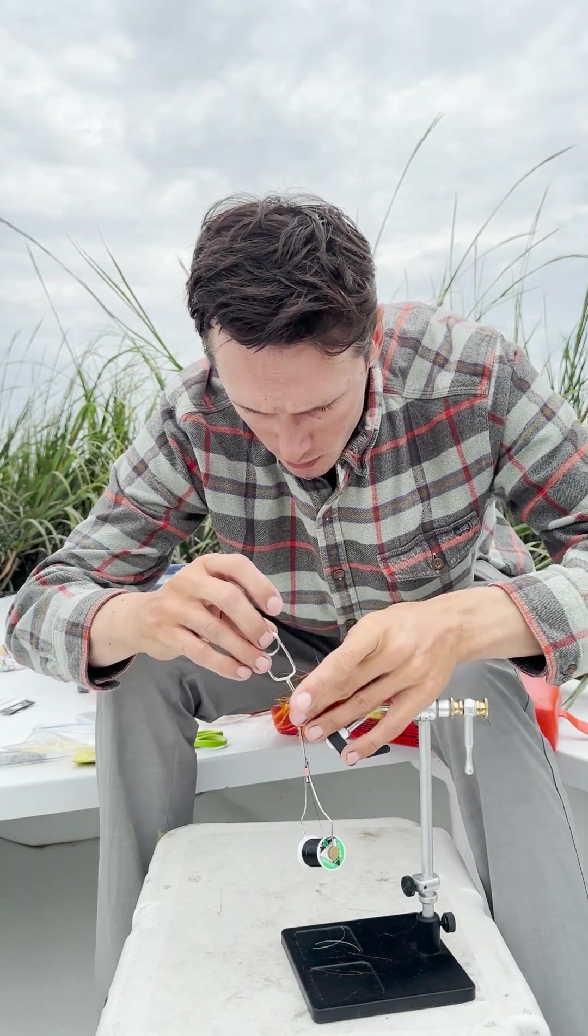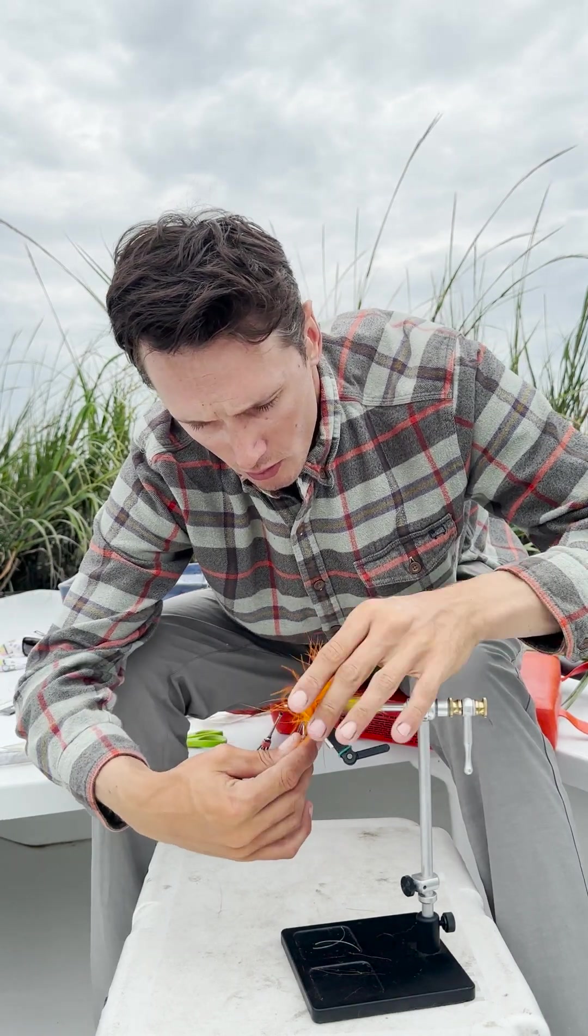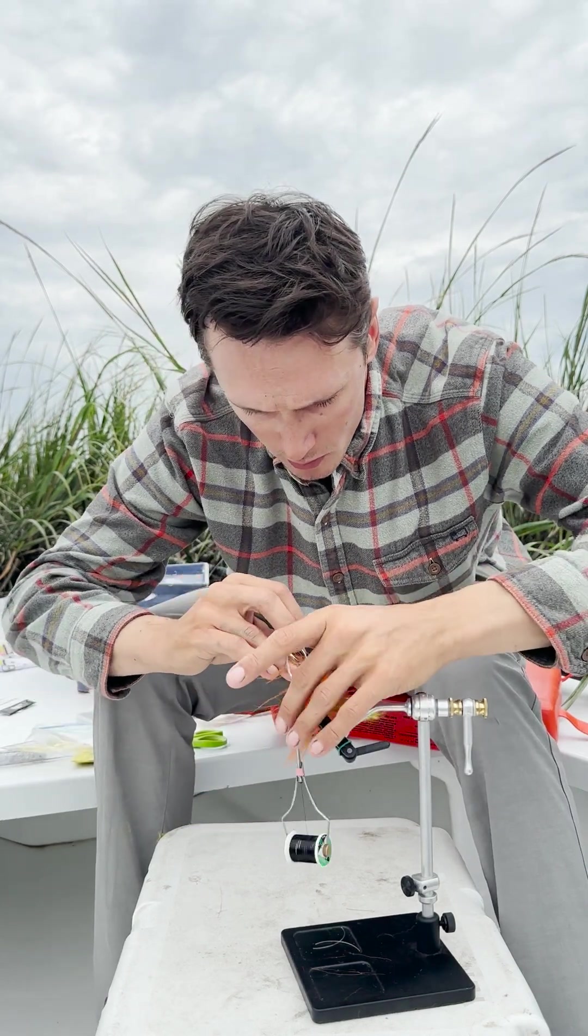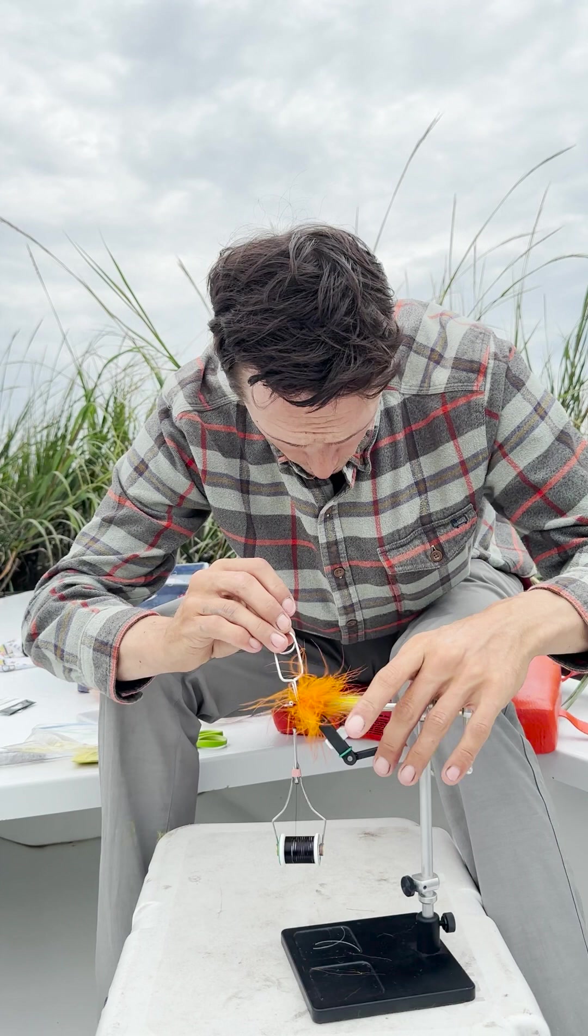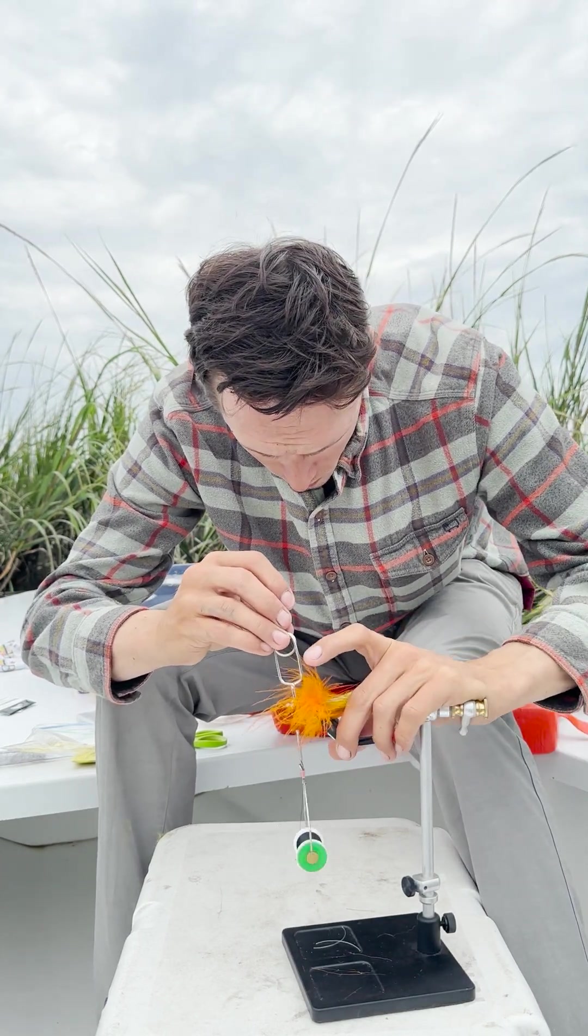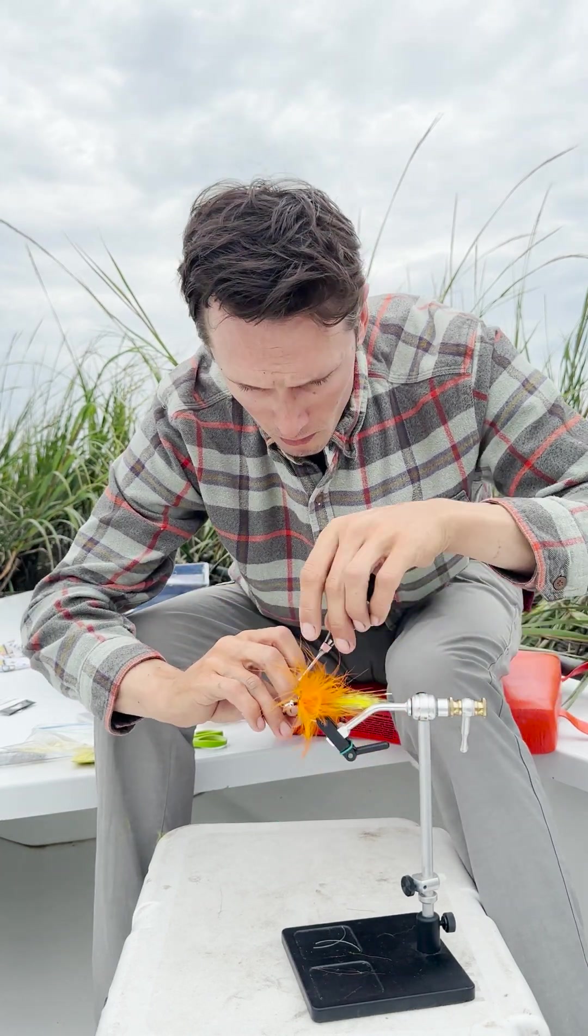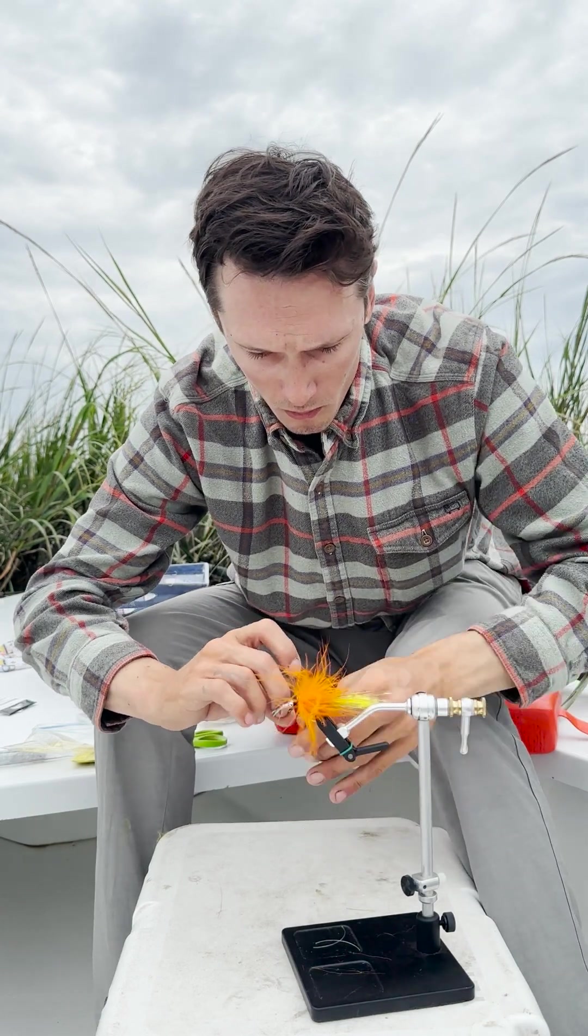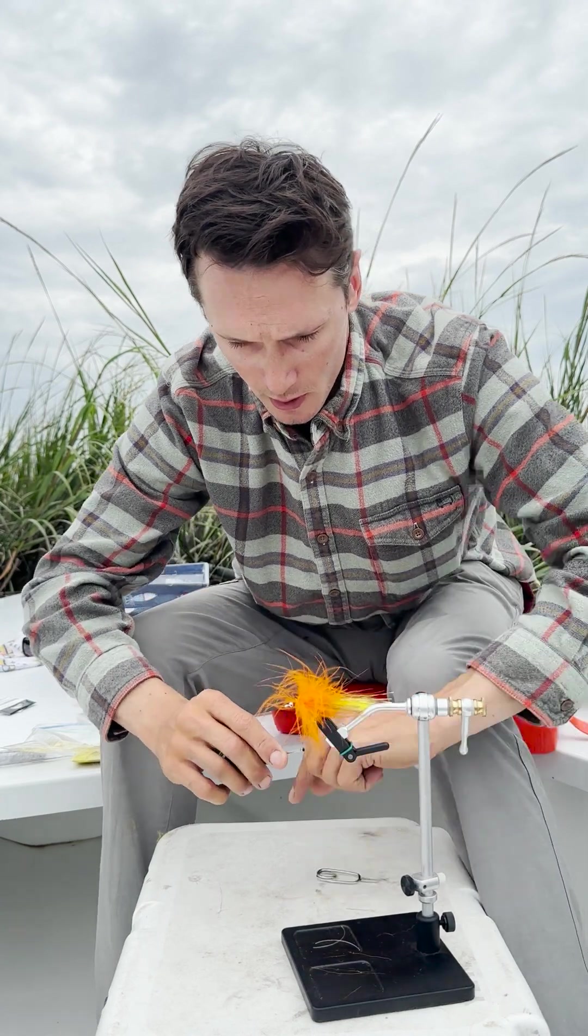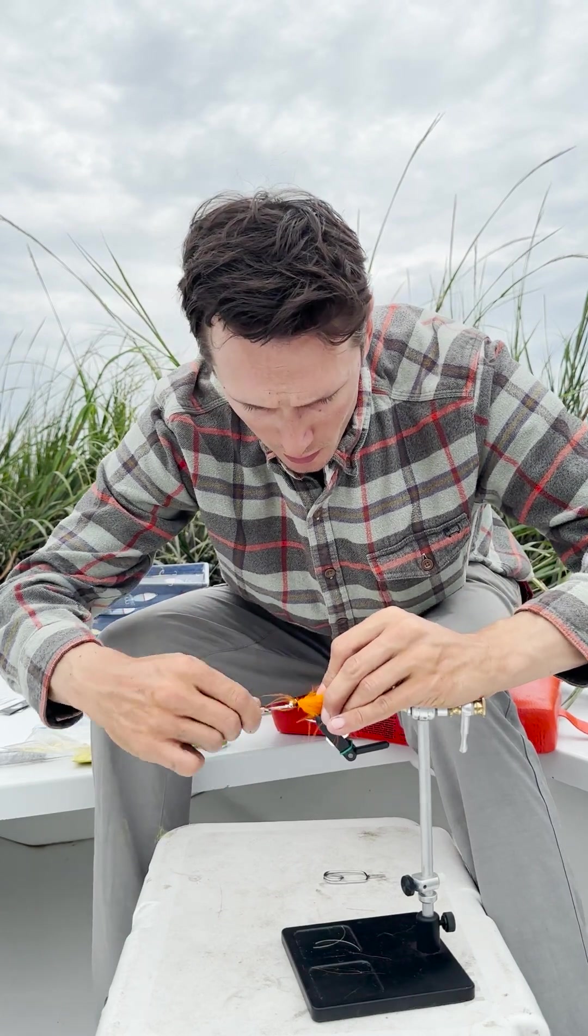I'll try to keep that nice and even. That's about good. Just takes two or three thread wraps to get that nice and tight. I usually trim it off, but this time I'm just going to kind of tie it down on there, the quill.